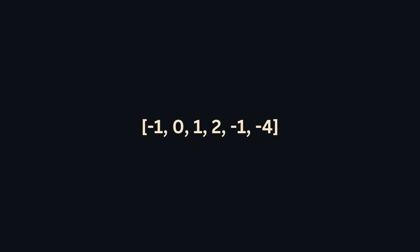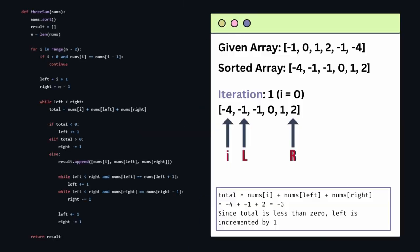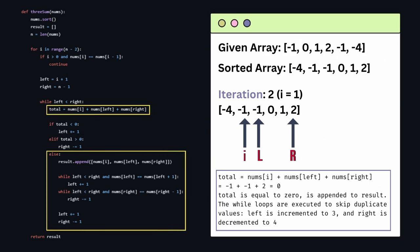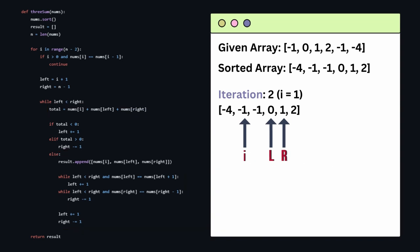Let's consider this array and go through all the iterations. First, we add up i, left, and right, and we find that since the total is less than zero, the left is incremented by one. In the next iteration, we find out that the total is equal to zero. The while loops are executed to skip duplicate values. The left is incremented to three, and the right is decremented to four.